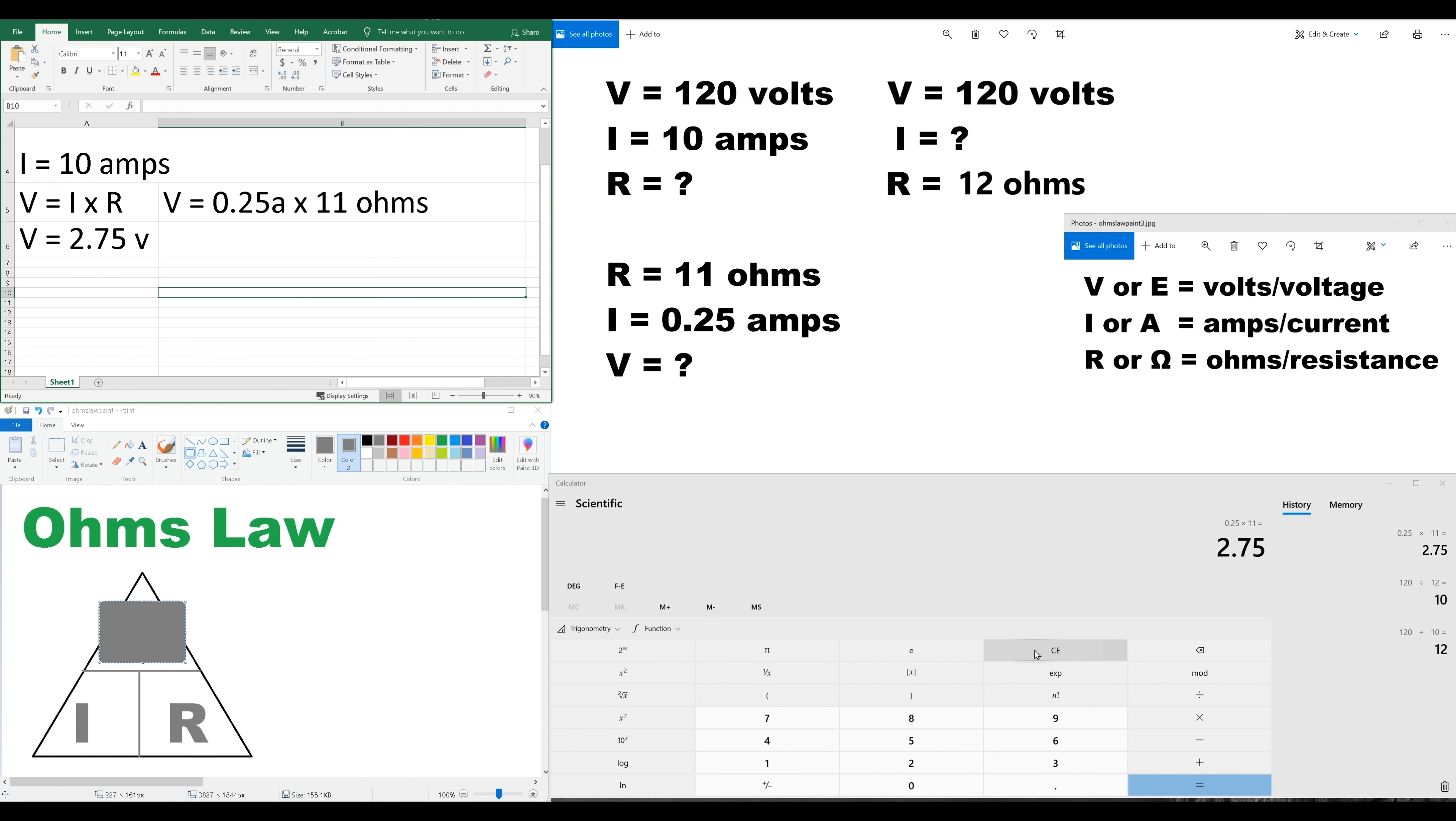And we can verify this quickly the same way that we just did by changing our positions. So, let's say we want to verify that our 11 ohms was correct. So, now we have our voltage. So, we want to solve for R. We want to see if that 11 ohms was right. So, it's V over I.